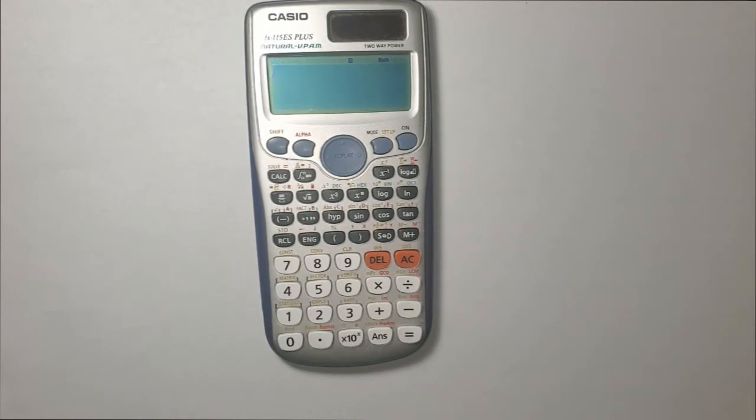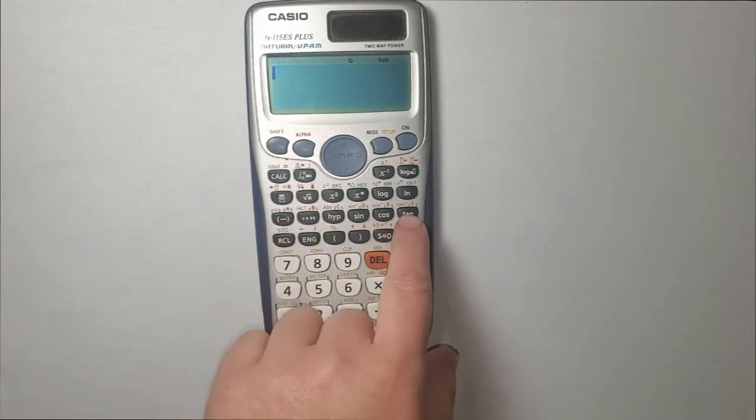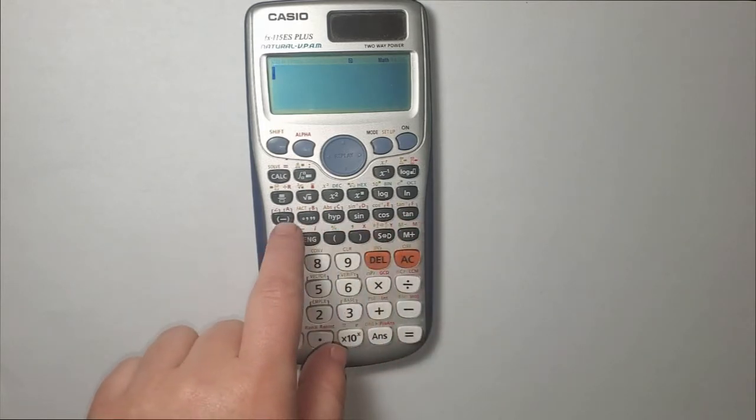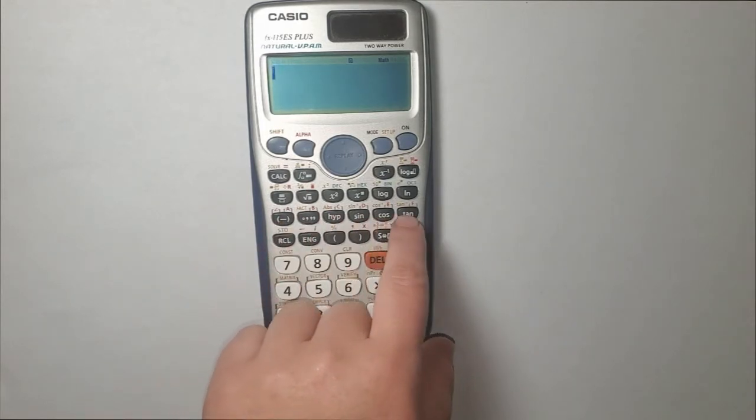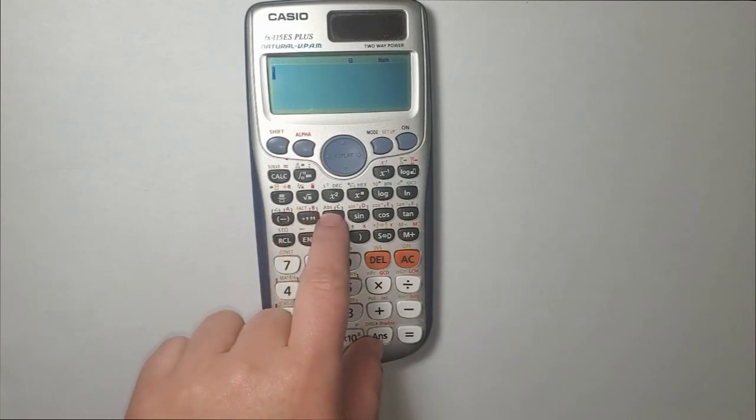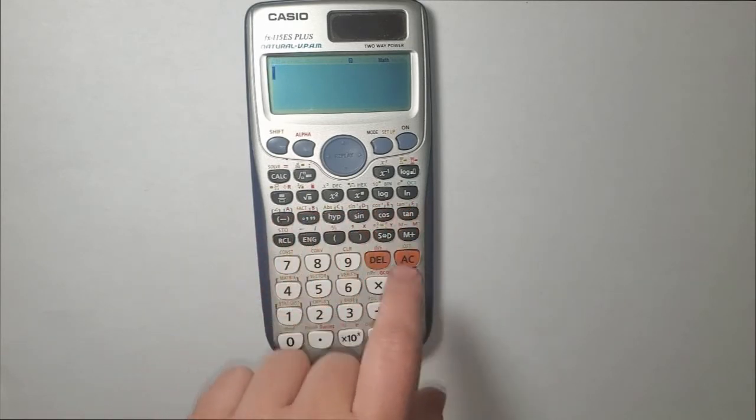This calculator has eight preset variables named from A to F and X and Y, and I'm referring to the red letters above each of the buttons here: A, B, C, D, E, F, X and Y.